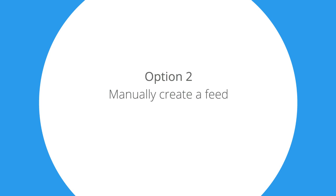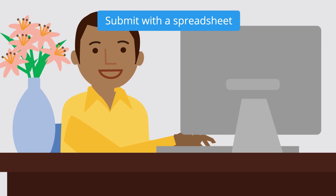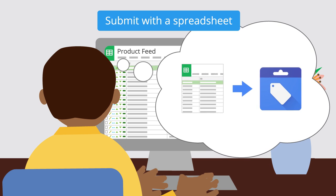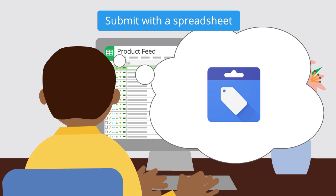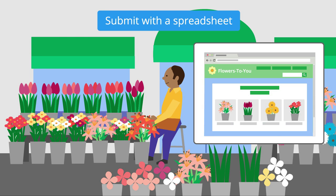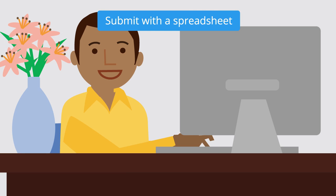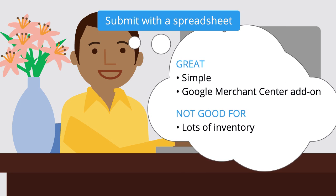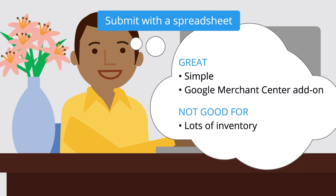Option 2: Manually create a feed. Businesses who don't use automated programs have other options. They could put a data dump into Google Shopping's format with their favorite spreadsheet application, such as Google Sheets. This is a good option for businesses that have less than 10,000 products and whose product data doesn't change often. Use the template in the Google Merchant Center add-on to pull data from your website and update your product information with a push of a button.